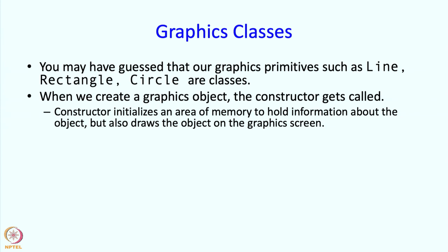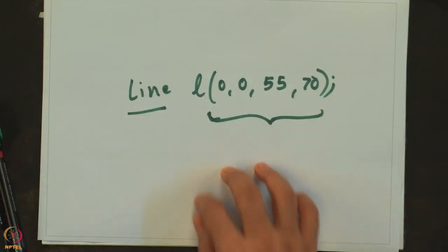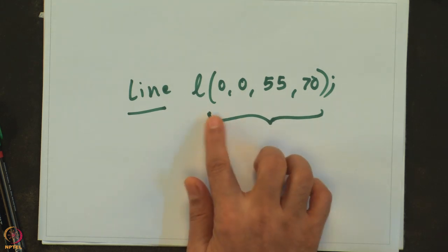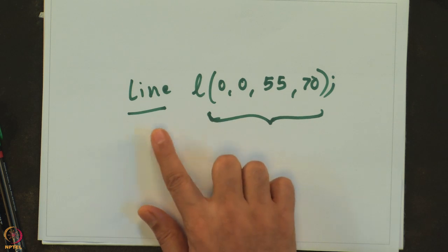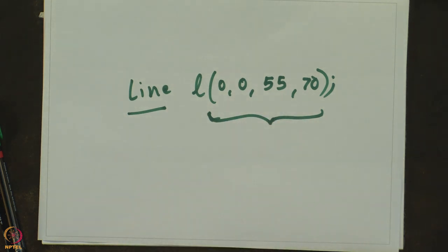But as we said earlier, constructors can contain arbitrary code as well. So in this case, the constructor code is actually also going to draw the object on the screen. So the important point is that our line creation commands are really constructor calls to a class called line, and similarly for circles, rectangles, and text.